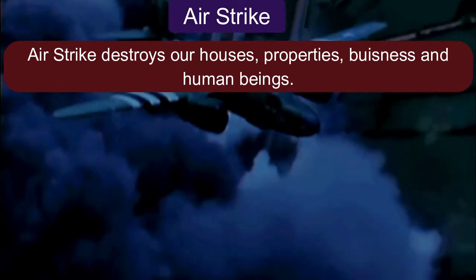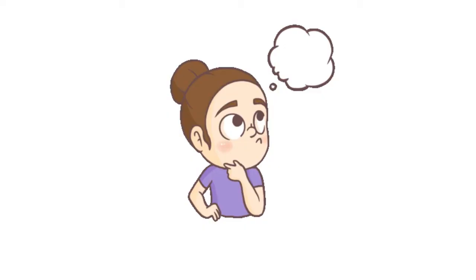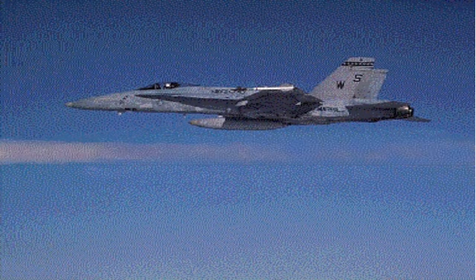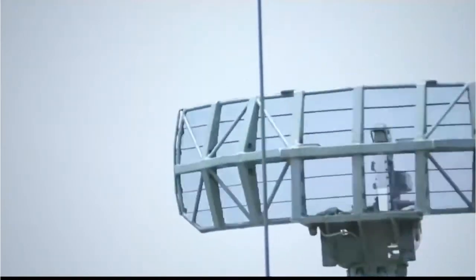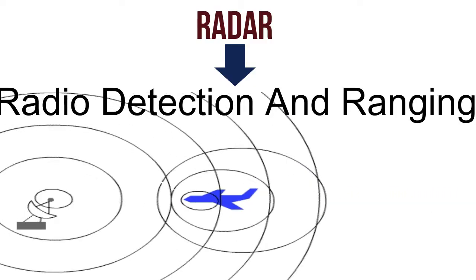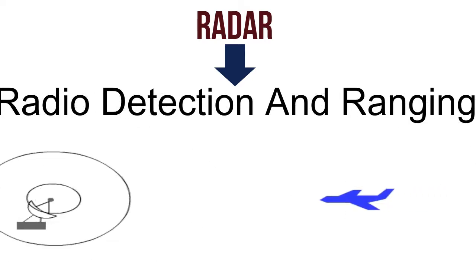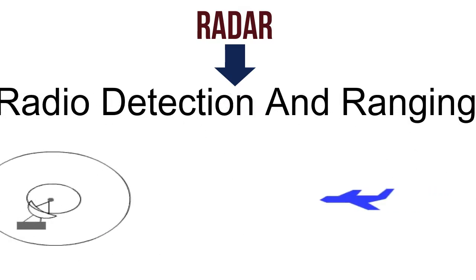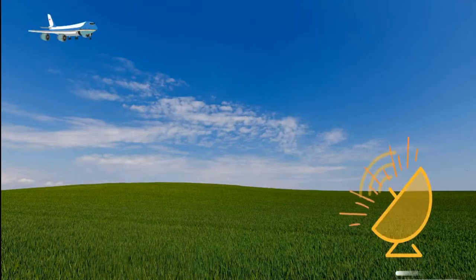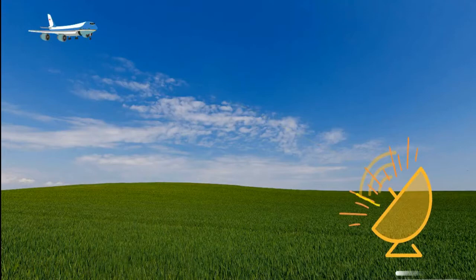The question arises: how can we be aware of an air strike? Our armed forces use radar. The word RADAR stands for Radio Detection And Ranging. A radar is a device or system used primarily for detecting and locating objects such as aircraft or surface features of a planet.